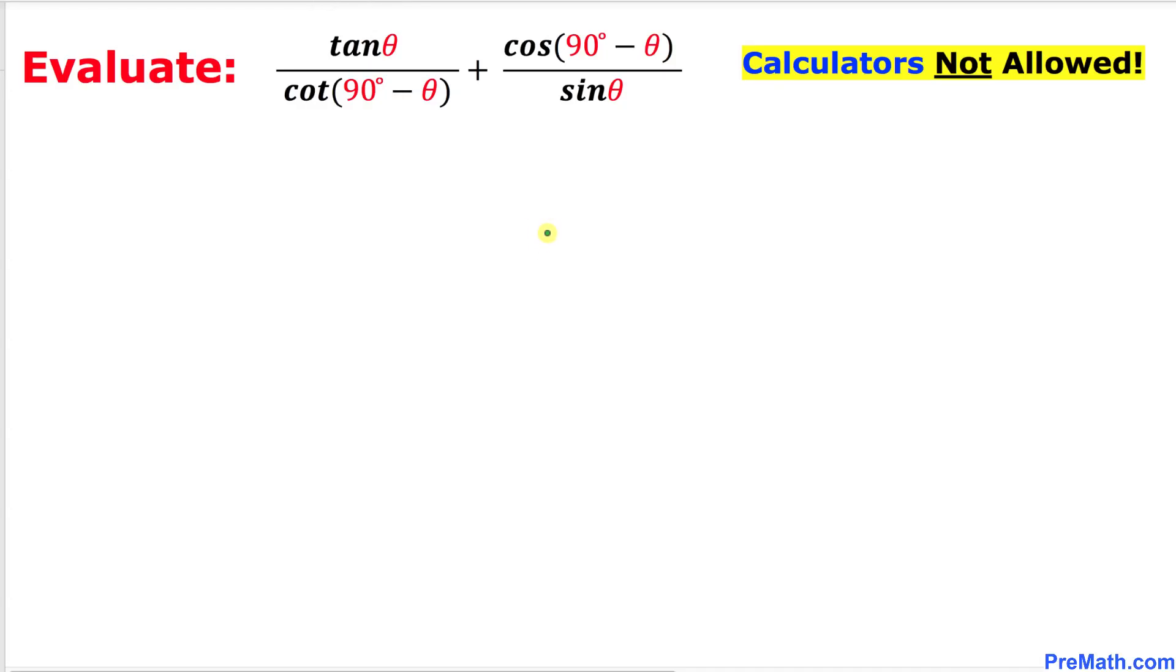Welcome to PreMath. In this video tutorial, we are going to find the value of this given rational expression: tangent of θ divided by cotangent of (90° - θ) plus cosine of (90° - θ) divided by sine of θ. Moreover, we are not supposed to be using calculators of any kind. So let's go ahead and get started with the solution.